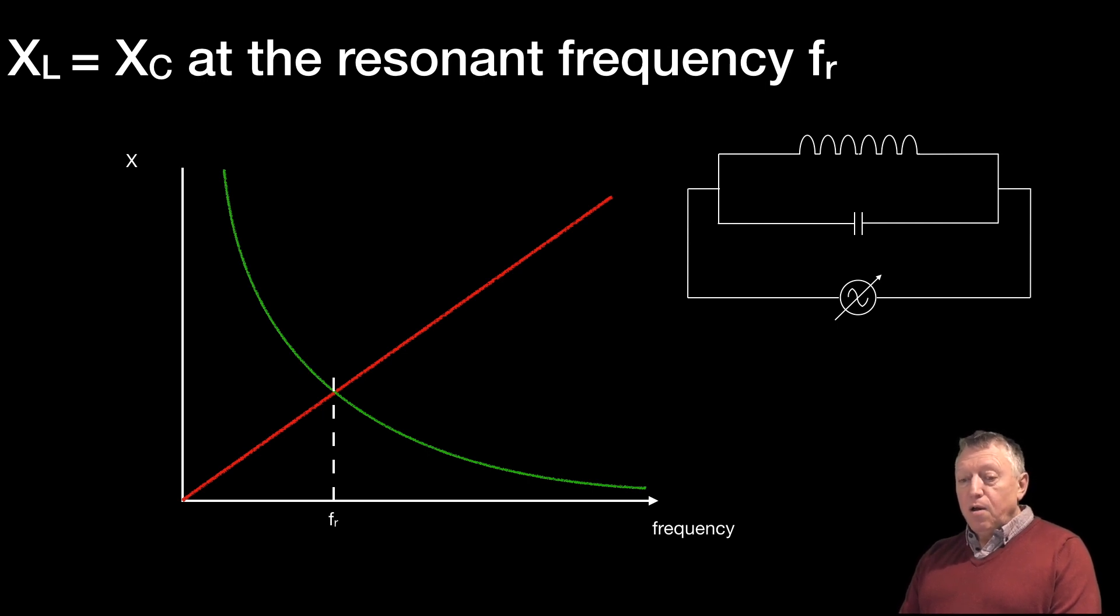There's a circuit with an AC generator, which is variable frequency. And as we increase the frequency from a low frequency to a high frequency, there will come a point when XL equals XC, and then we have resonance. It's a resonance circuit. And we've shown there a parallel tuned circuit.